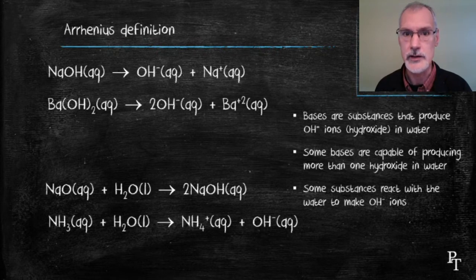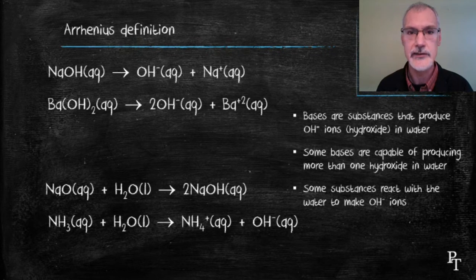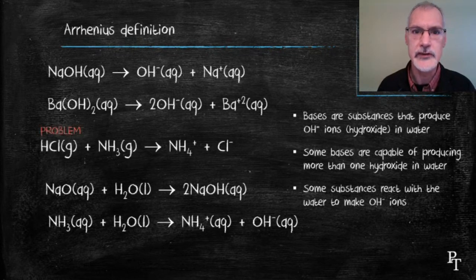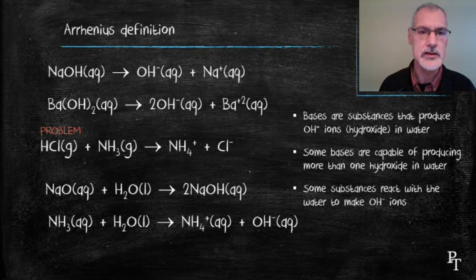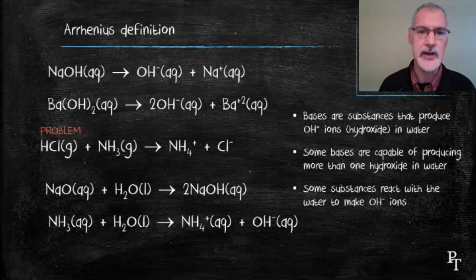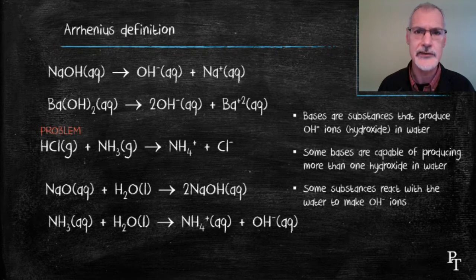Ammonia can react with water to produce hydroxide ions. But there is a small problem that existed with Svante Arrhenius' definition. It always restricted it to water. And we do have examples of reactions with acids and bases that can take place in the gas phase. For instance, hydrogen chloride reacting with ammonia gas.